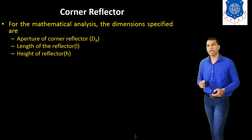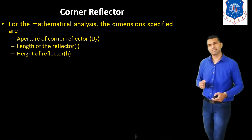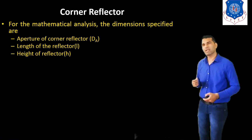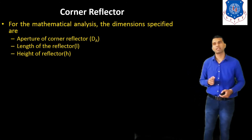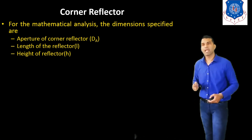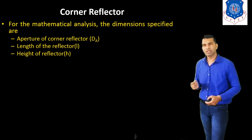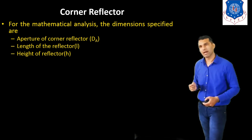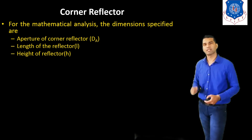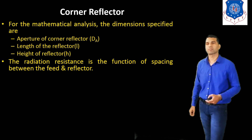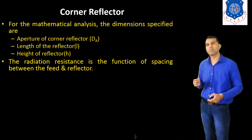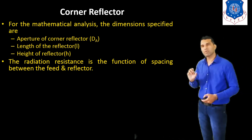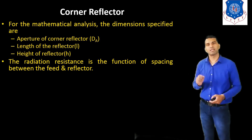For the mathematical analysis, the dimensions specified are: aperture of corner reflector, denoted by DA; then the length of the reflector, that is L; and the height of the reflector, that is the edge. The radiation is a function of the spacing between the feed and the reflector.